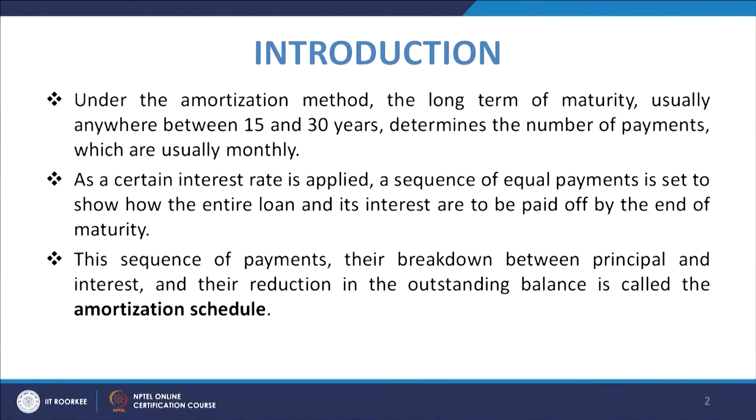Welcome to the lecture on Analysis of Amortization Schedule. We had an introduction about the amortization concept where mortgage debt is involved. Under these amortization methods, the long-term maturity may be from 15 to 30 years, which determines the number of payments, usually monthly. For a 30-year loan, the number of payments will be 30 × 12 = 360 monthly payments. A certain interest rate is applied and a sequence of equal payments is set to show how the entire loan and its interest are to be paid off by the end of maturity.